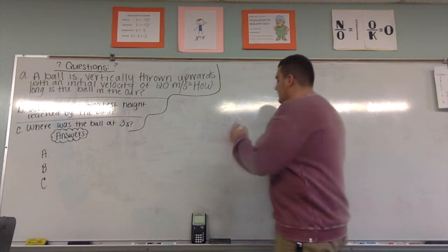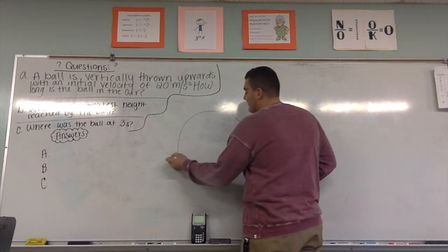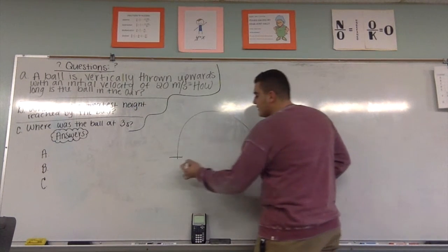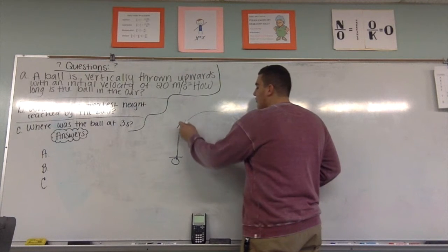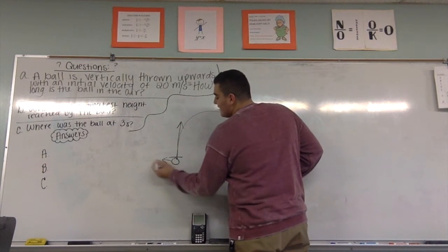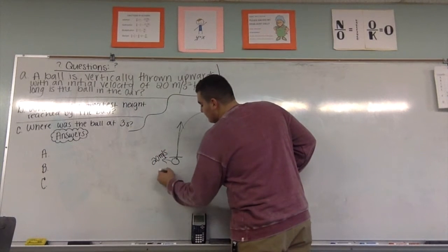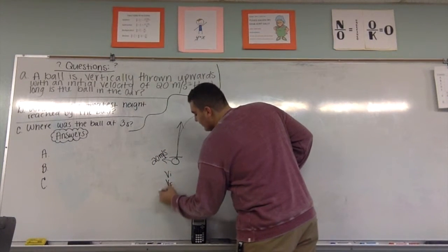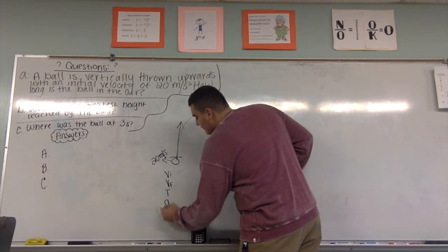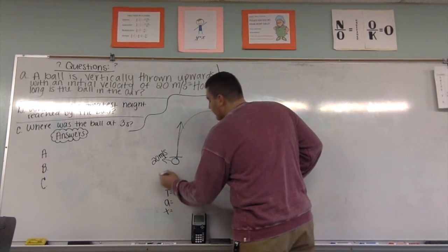So first thing I like to do is draw a diagram. Our ball is going to start here and go upwards. We know the initial velocity is 20 meters per second. So we're going to list our five things and fill in what we know.